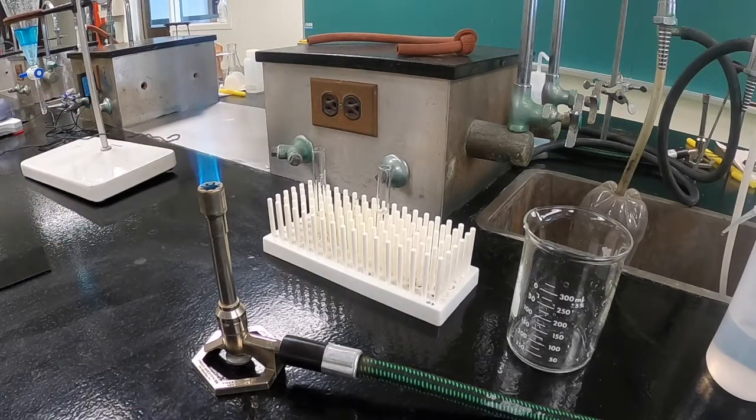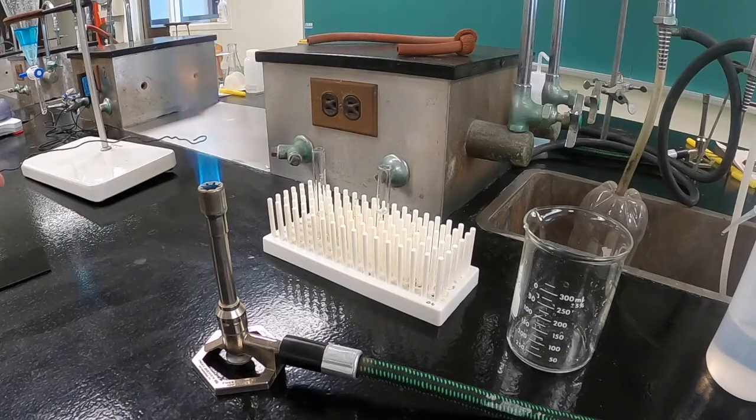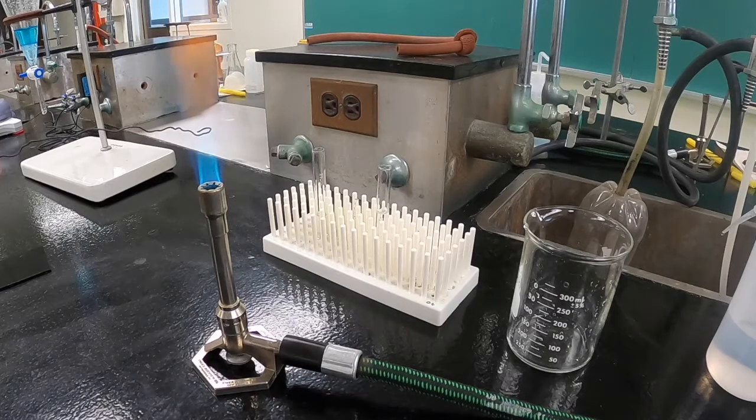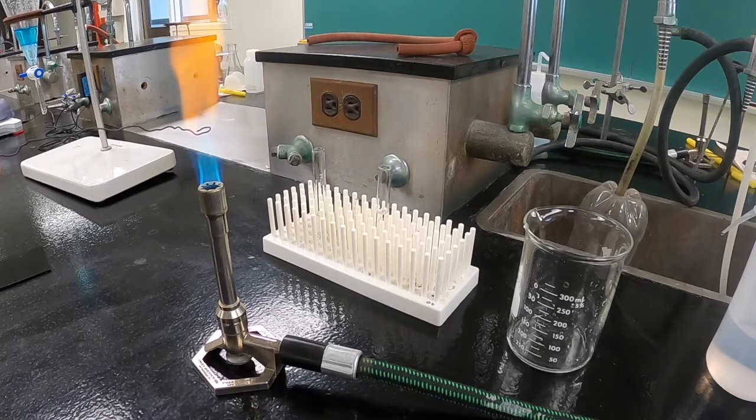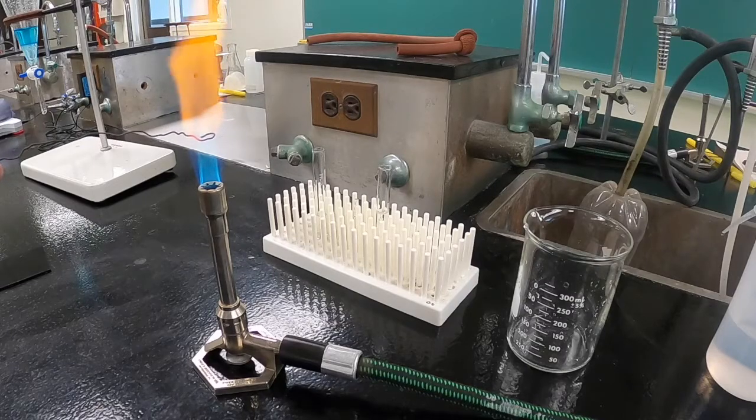You should then heat the wire in a Bunsen burner flame and you want to continue heating until the flame color stabilizes. And this may take a moment.